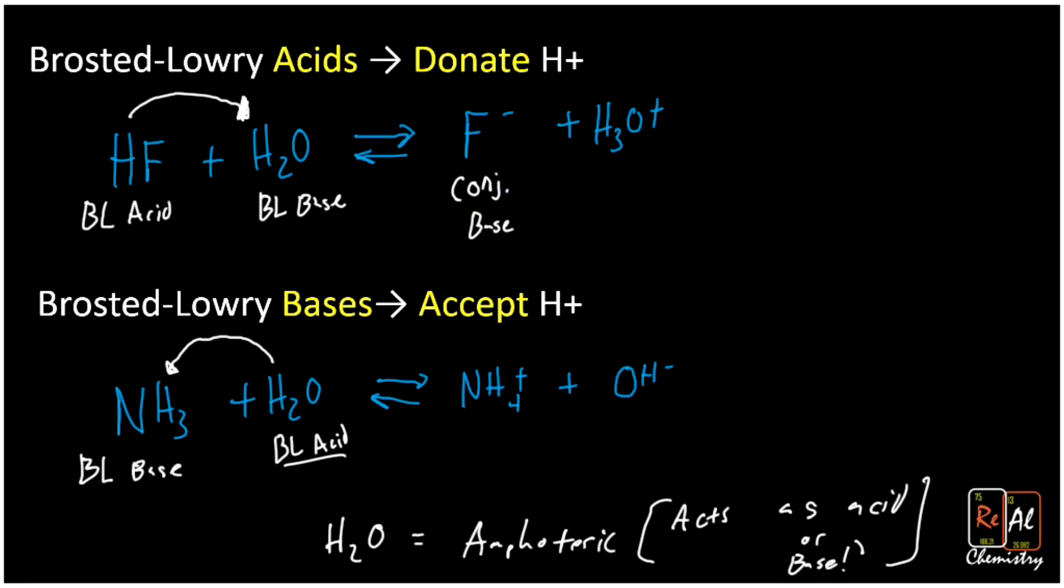Why is it a conjugate base? Well, think about what fluorine would do. It's negatively charged. So if fluorine had to do something with a proton, it would accept a proton. Meanwhile, H3O+ becomes a conjugate acid, because it now has an extra hydrogen it could give up. So whatever was my Bronsted-Lowry acid becomes a conjugate base. Whatever was my Bronsted-Lowry base becomes a conjugate acid.